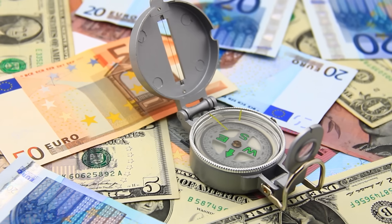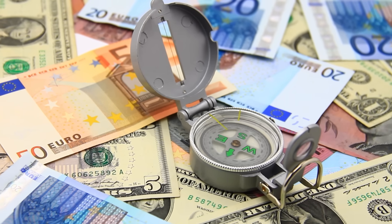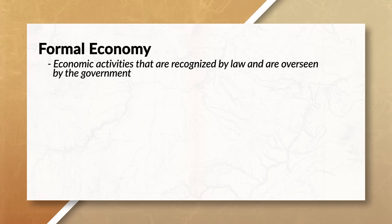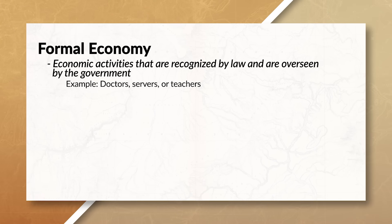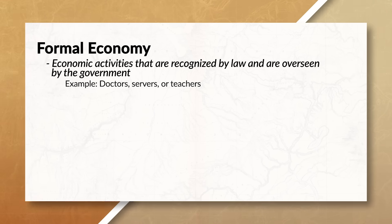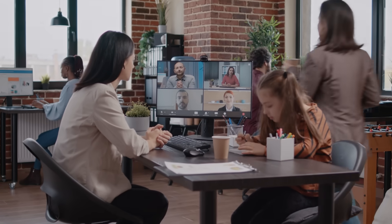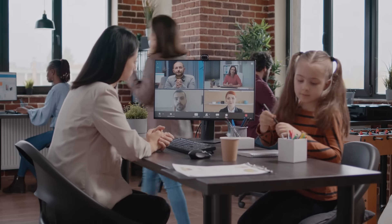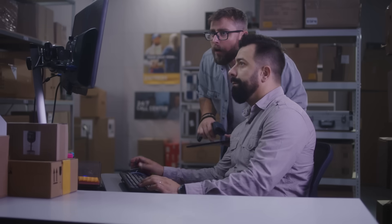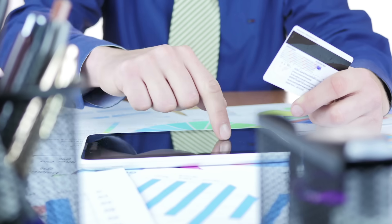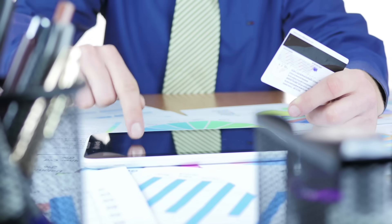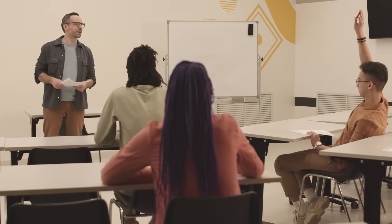To start, let's review the difference between the formal economy and the informal economy. The formal economy consists of economic activities that are recognized by law and are overseen by the government. Jobs and activities in the formal economy have set rules, legal protections, and are taxed by the government. They also have access to traditional financial services such as banks. Examples of jobs in the formal economy would be doctors, servers, or teachers.